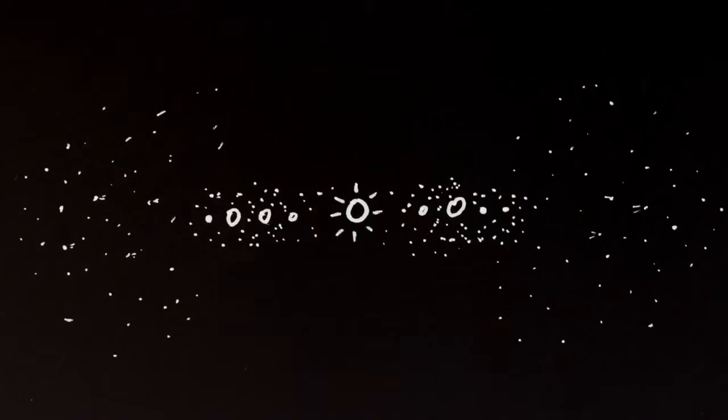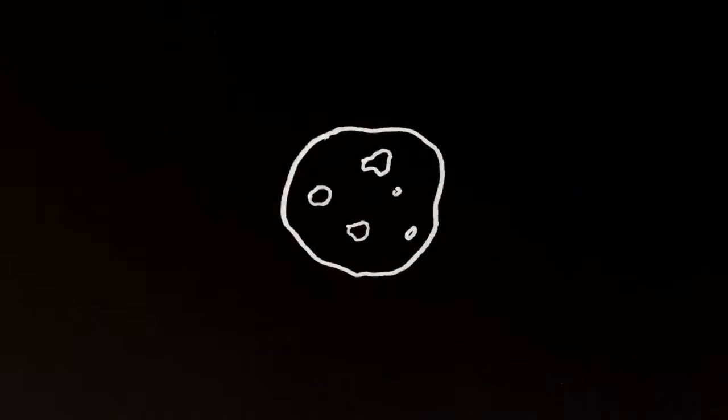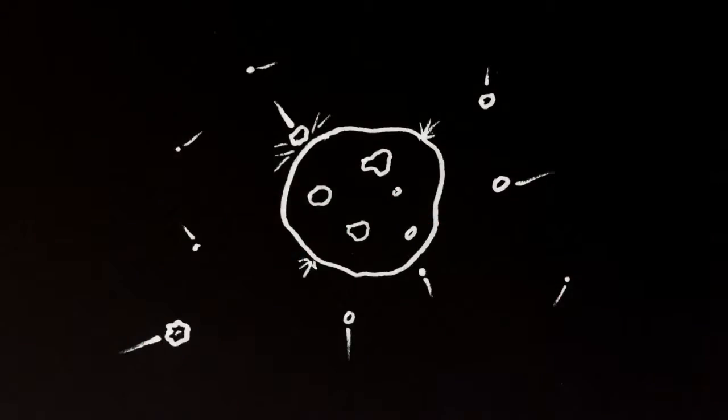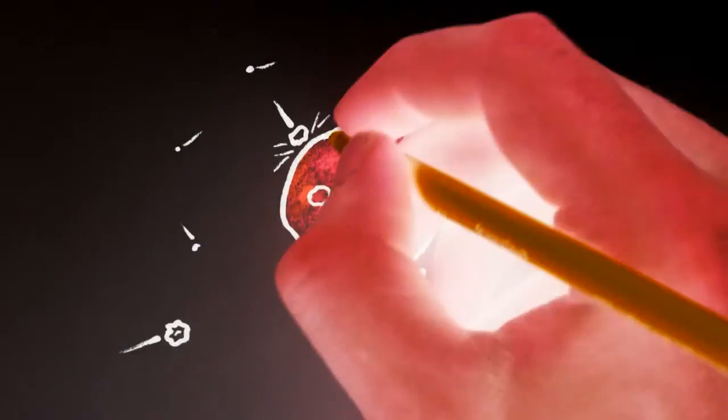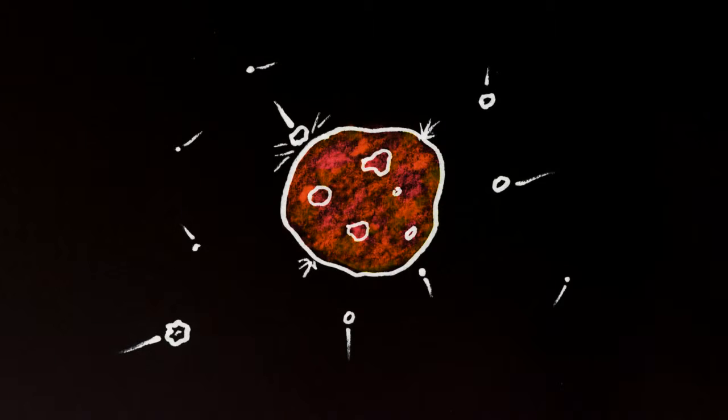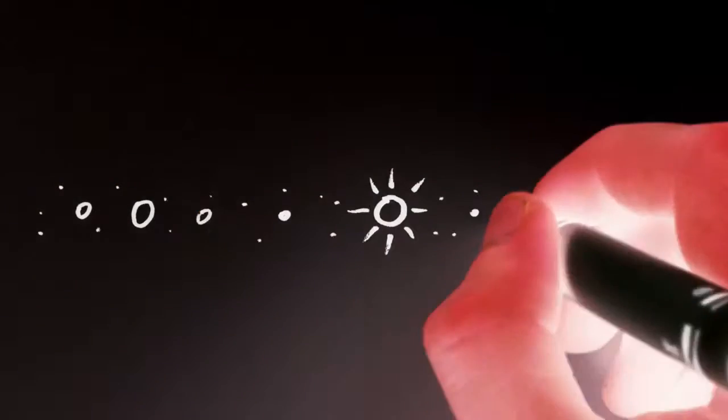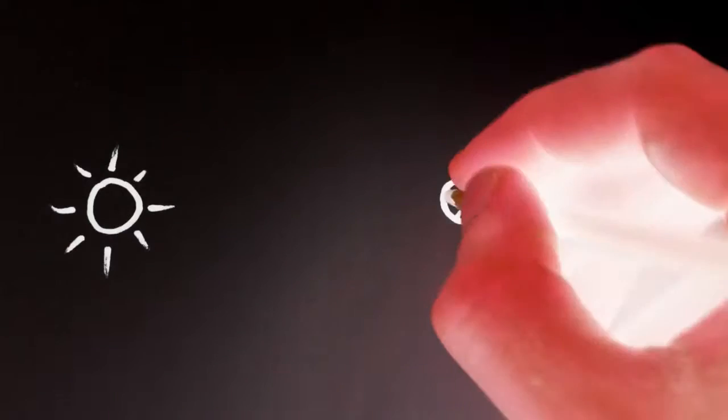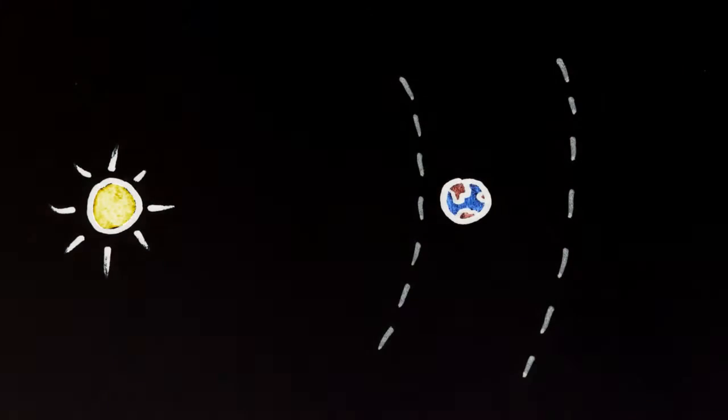For several hundred million years, the persistent impacts of high-velocity comets and other leftover debris rendered molten the surfaces of the rocky planets, preventing the formation of complex molecules. As less and less accretable matter remained in the solar system, the planet's surfaces began to cool.